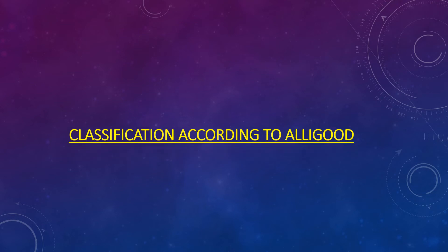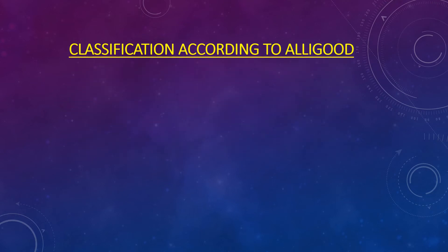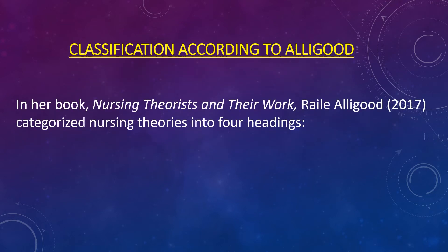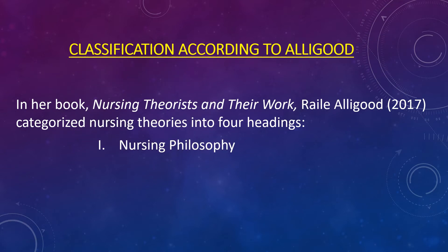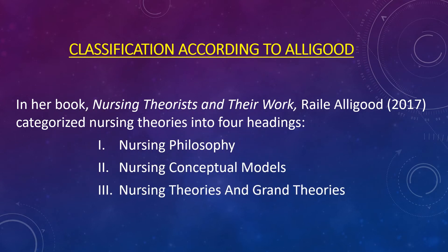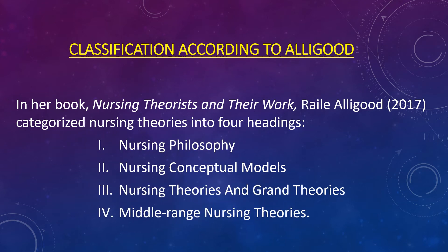Here we have another classification according to Ali Goode. Ali Goode in her book Nursing Theorists and Their Work in the year 2017 categorized nursing theories into four headings: category according to nursing philosophy, nursing conceptual models, nursing theories and grand theories, and middle range nursing theories.